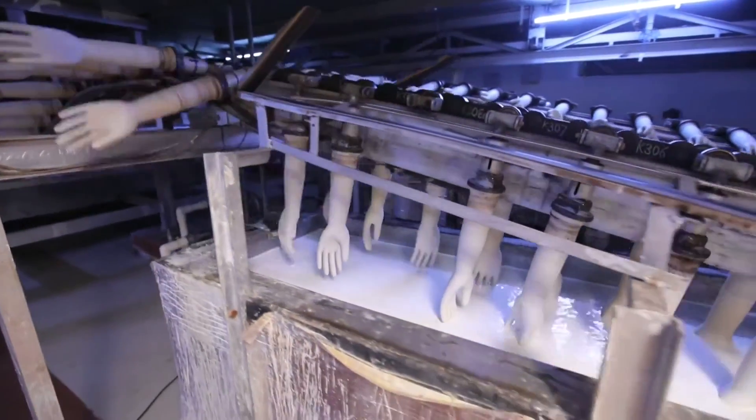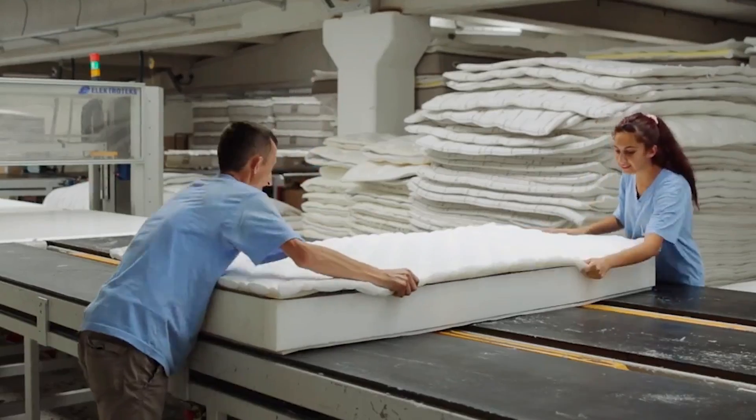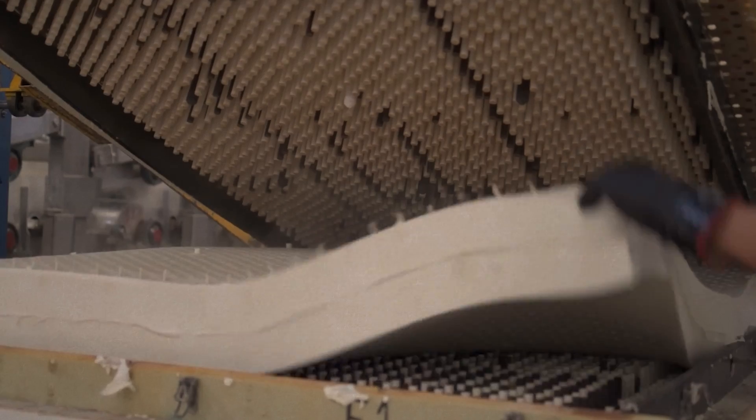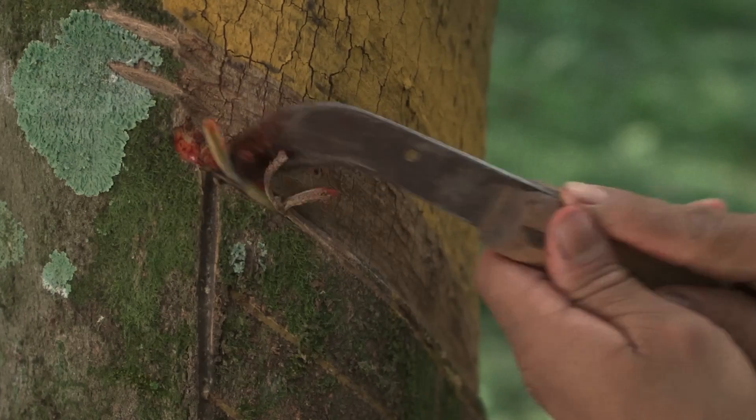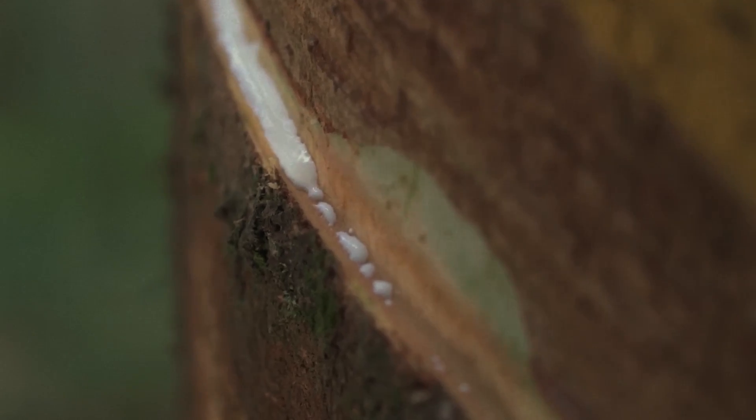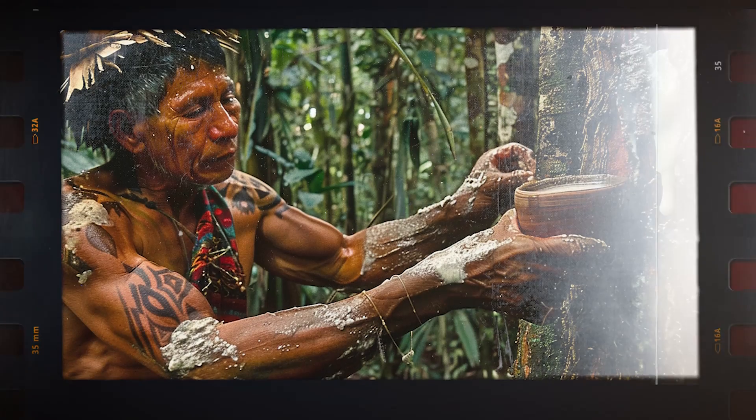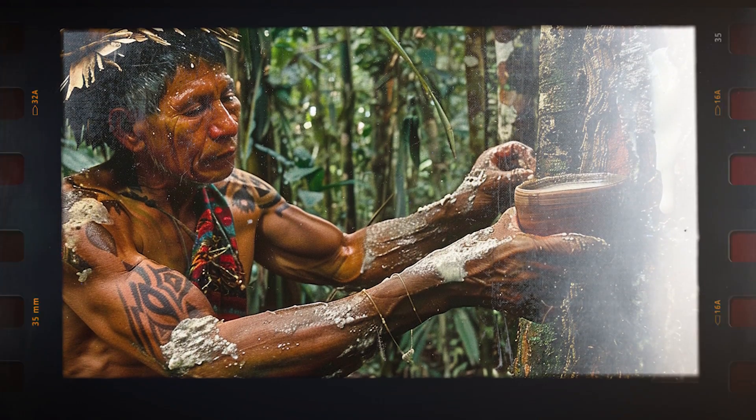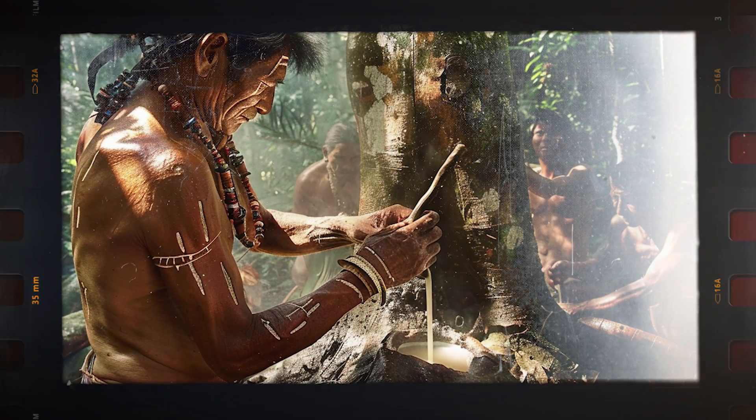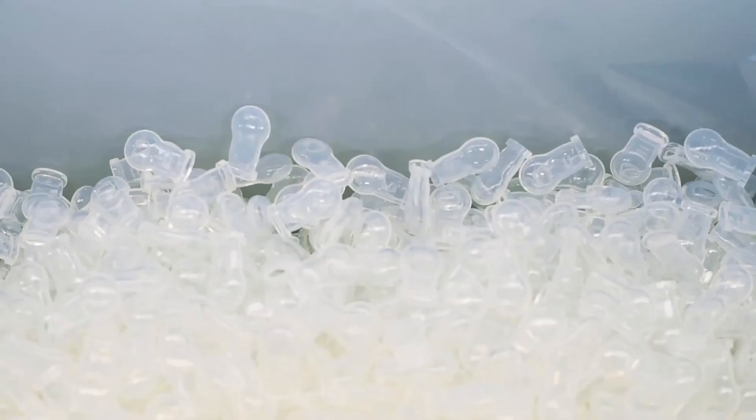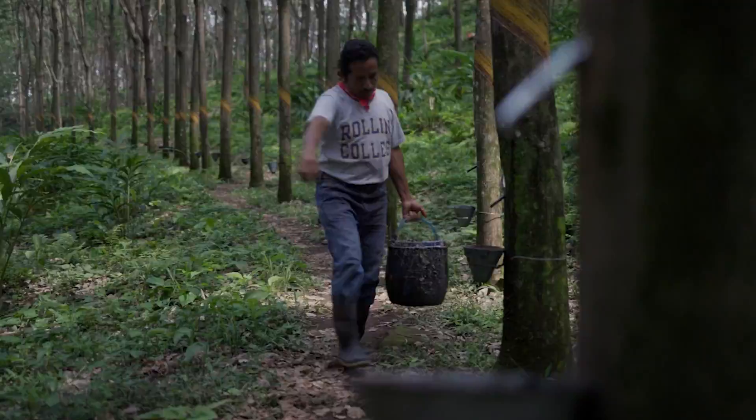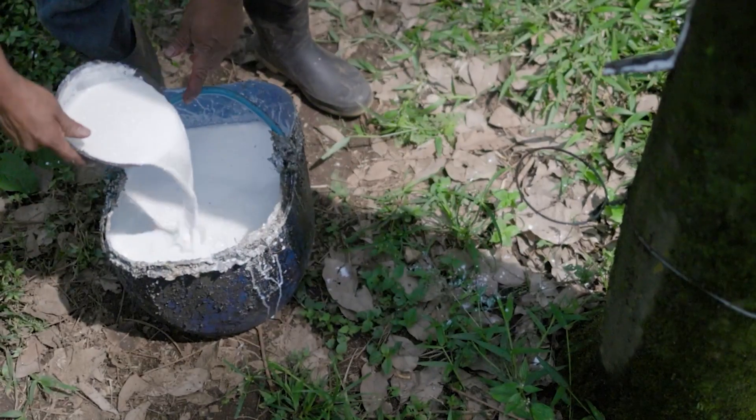You might think latex gloves or the mattress you love are modern inventions, but that's not true. The stuff that makes them has been around for a crazy long time—over 3,500 years. We're talking about ancient civilizations tapping trees to get this milky sap. Fast forward to today and latex is everywhere. Each year, more than 12 million tons of natural rubber is produced.